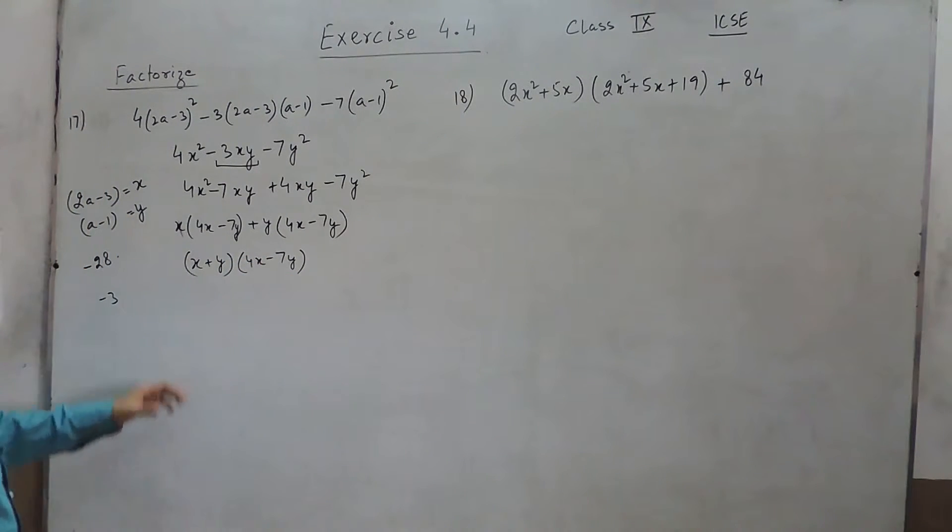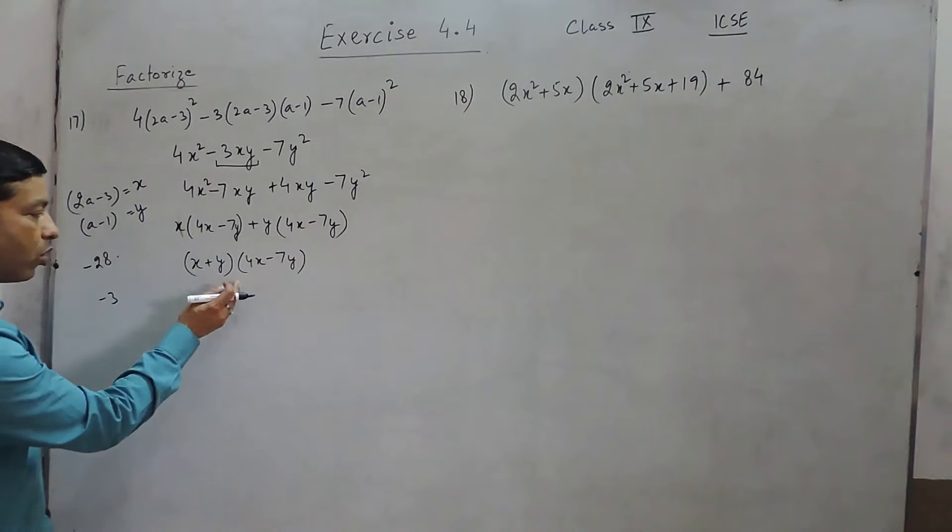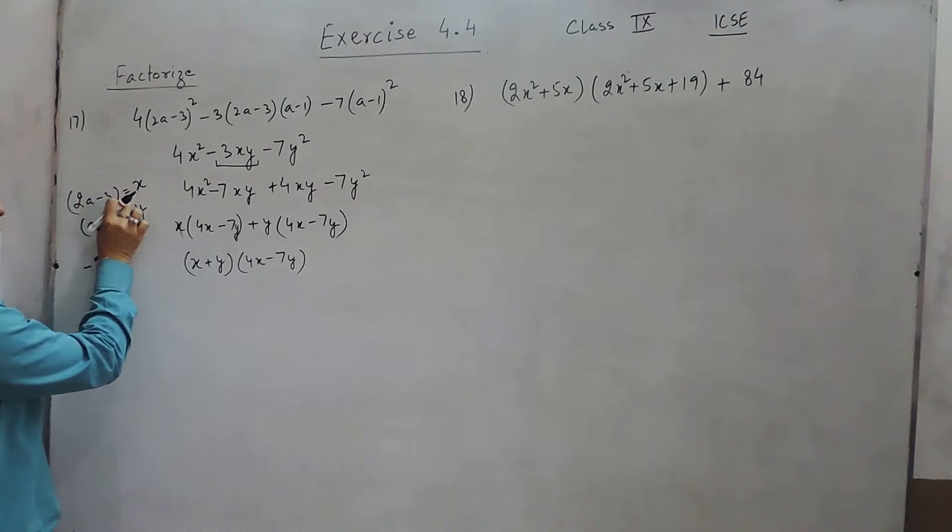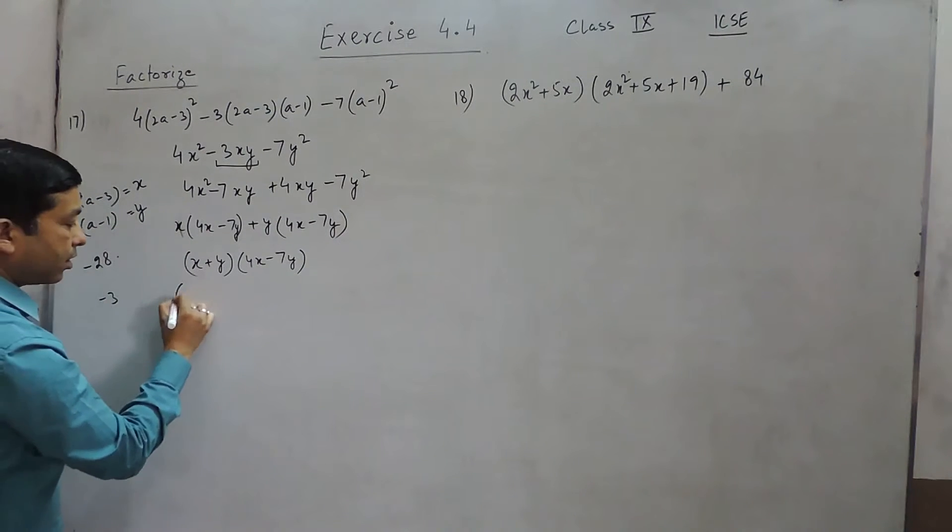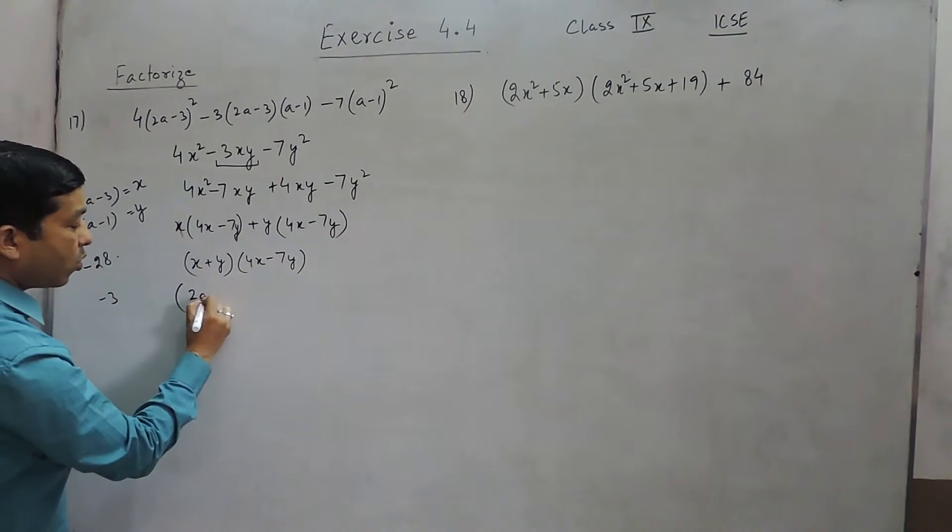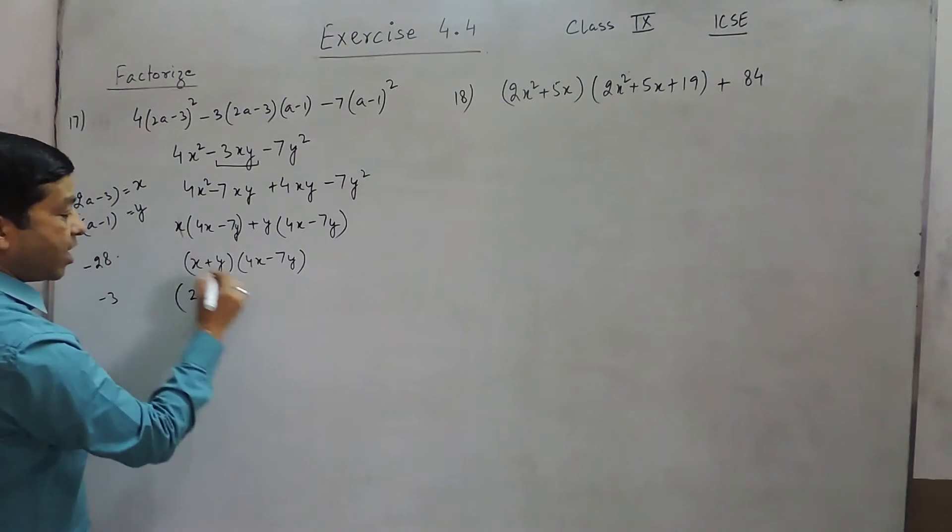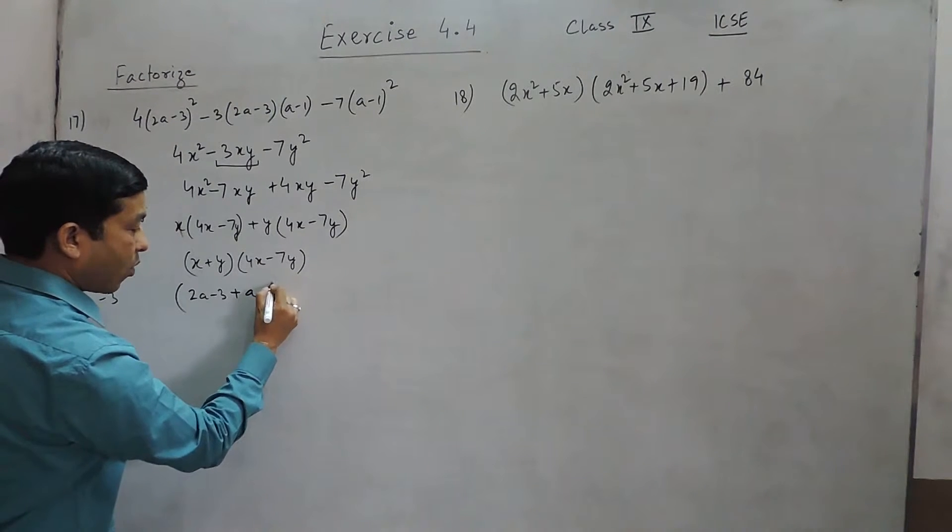Now as I already told you that 2a - 3 we have put as x and a - 1 we have put as y. So here also the value of x and y can be put as 2a - 3 and a - 1. So the first factor becomes (2a - 3) + (a - 1). This is the first factor.